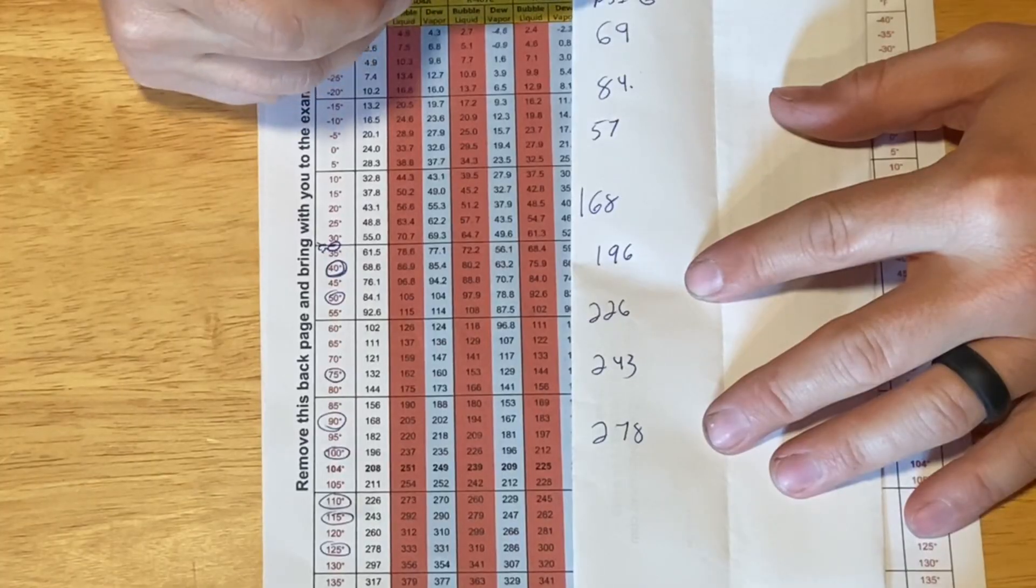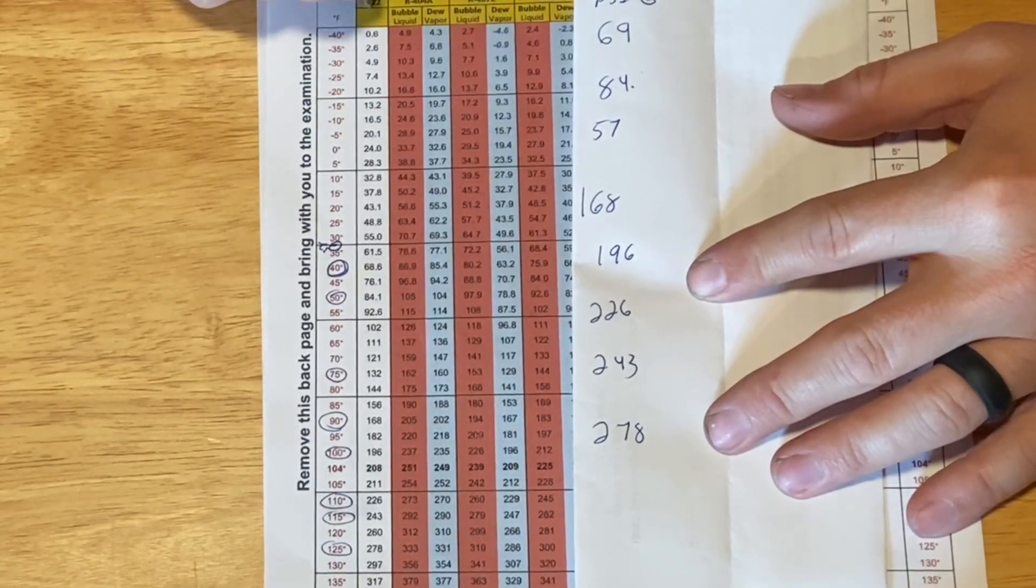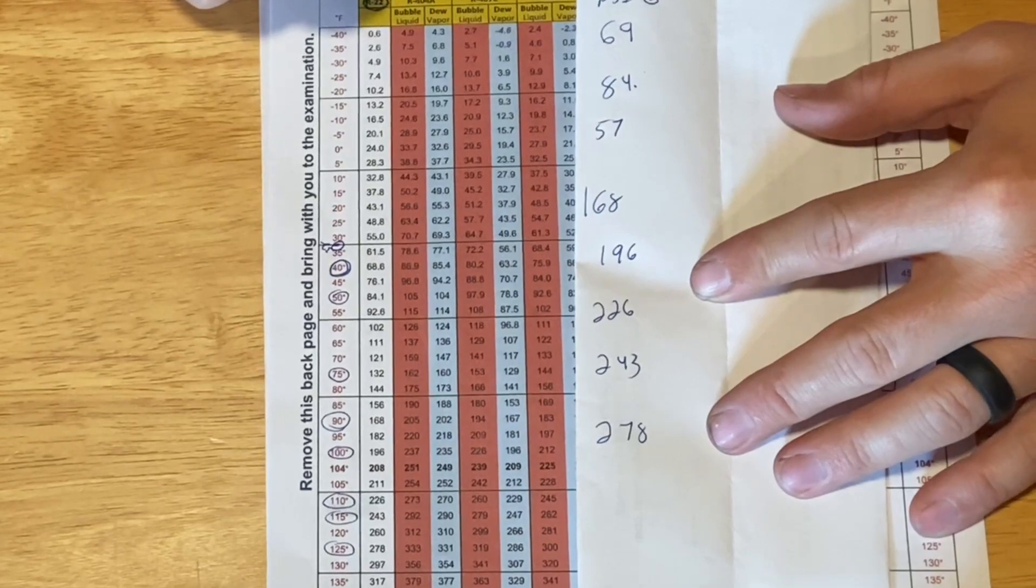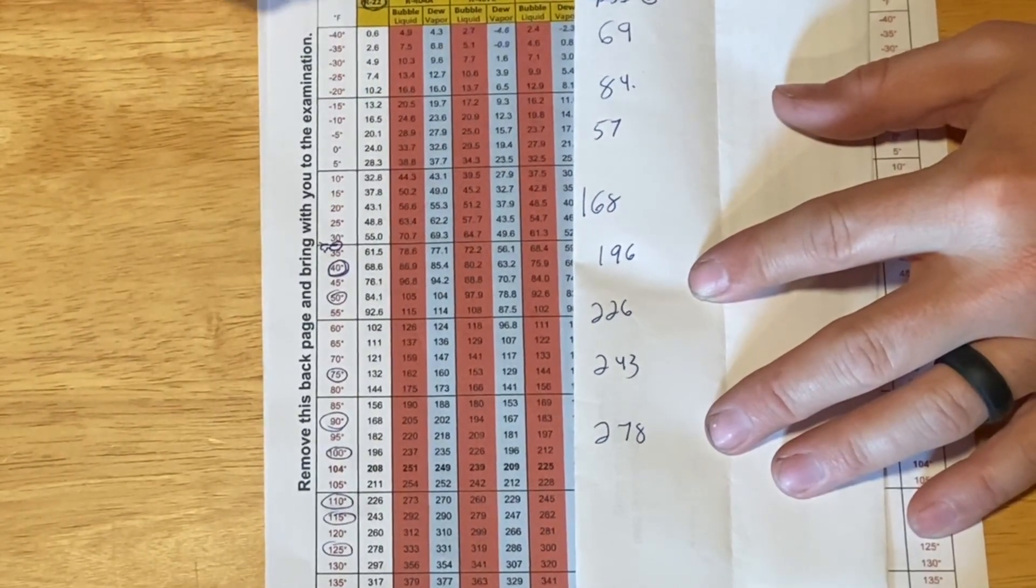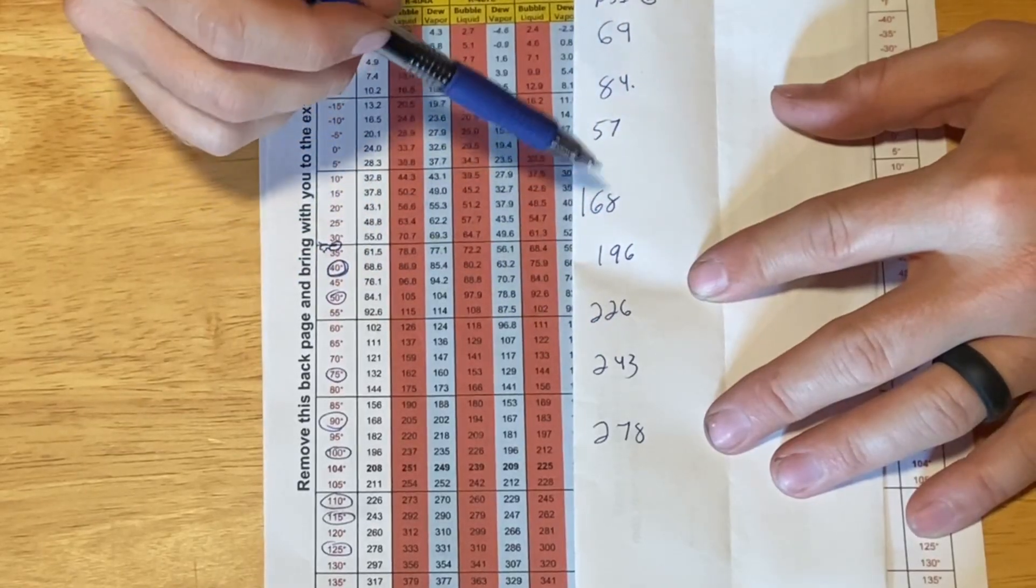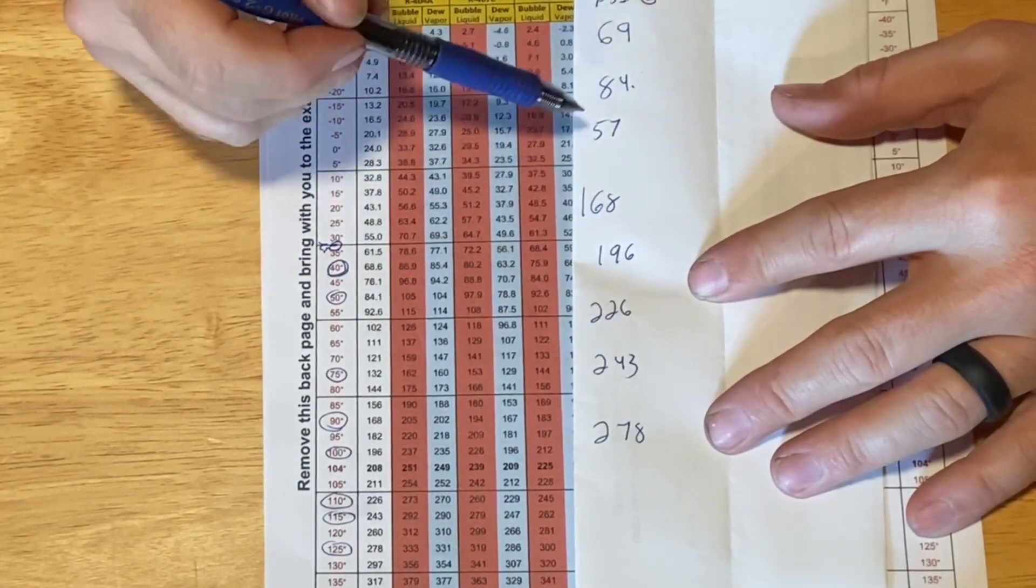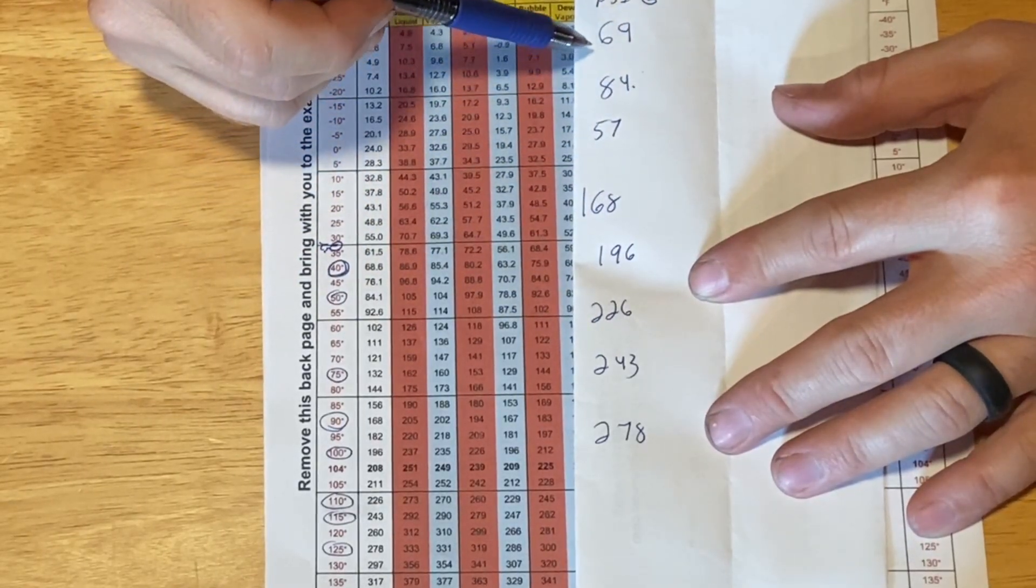Here's HCFC R22 psi gauge. So in this particular temperature pressure chart R22 is right here. This is gonna be our pressures. We're gonna convert them to a saturated temperature. Here's a list of pressures. Go ahead and write these down. Pause the video. Write these down. And we're gonna go through them together.